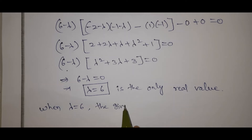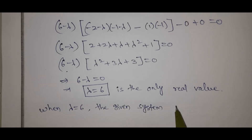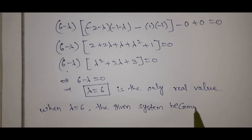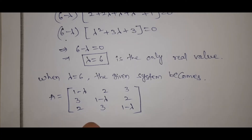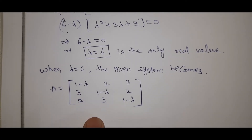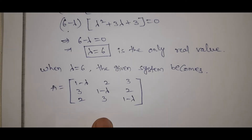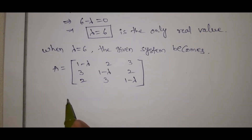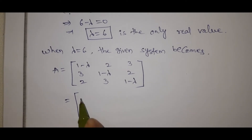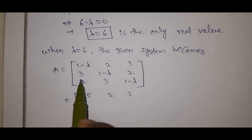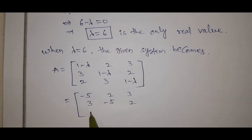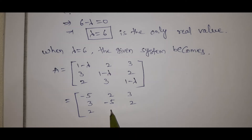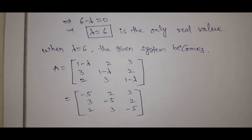When lambda equals 6, the given system becomes the matrix A with entries: first row (1−6, 2, 3) = (−5, 2, 3), second row (3, 1−6, 2) = (3, −5, 2), third row (2, 3, 1−6) = (2, 3, −5). Now we form the augmented matrix.